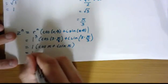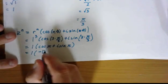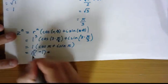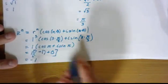That's going to be one times cosine of pi is negative one, plus zero. So this is just negative one.